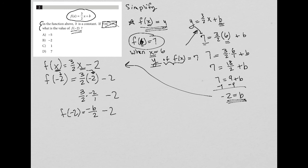This is still f of negative two equals, and then negative six divided by two is negative three. So f of negative two equals negative three minus two, and f of negative two therefore is equal to negative five, meaning that my final answer here is choice A.